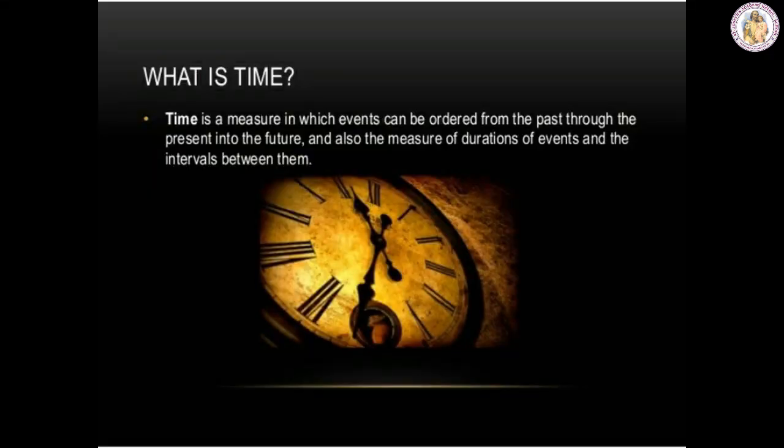Let us know what does time mean. Time is a measure in which events can be ordered from the past through the present into the future. It also measures the duration of every event and also the intervals between them.